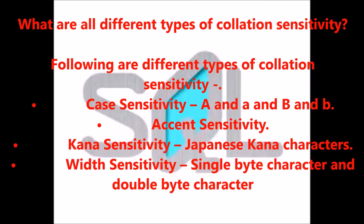What are all the different types of collation sensitivity? Following are different types of collation sensitivity: Case sensitivity — A and a, and B and b.